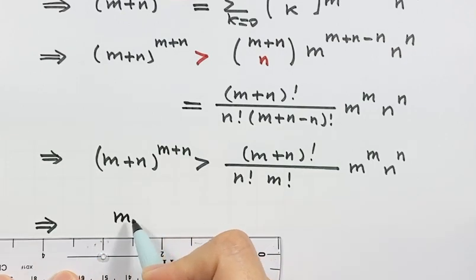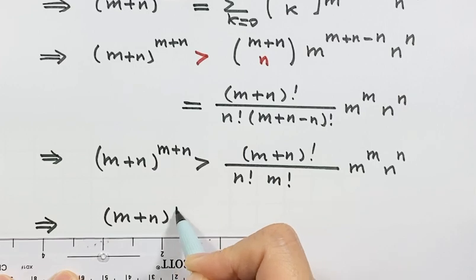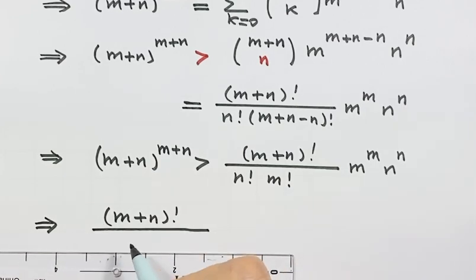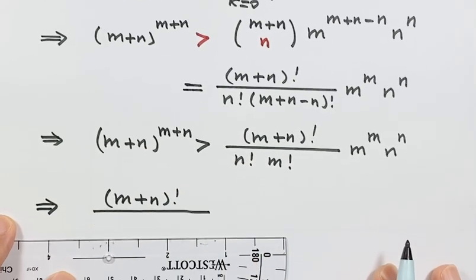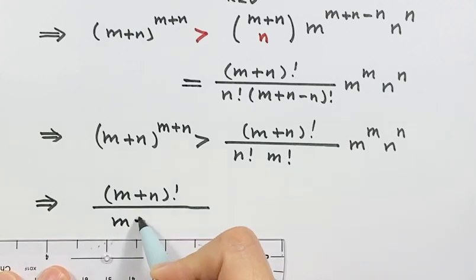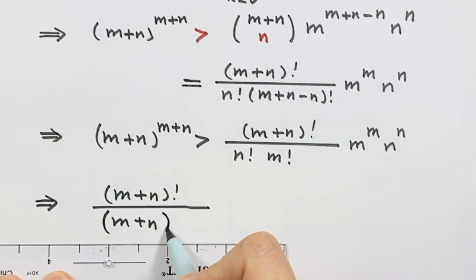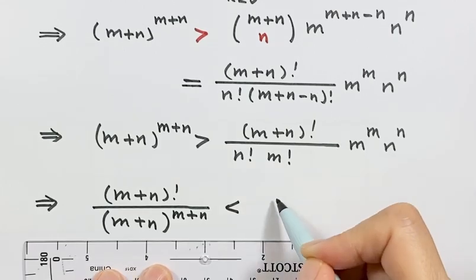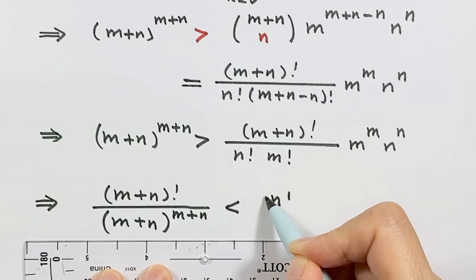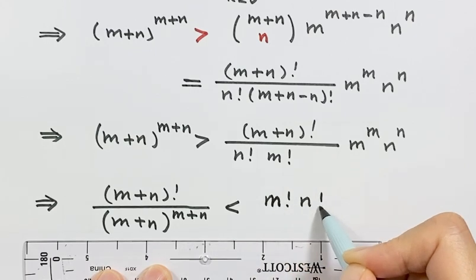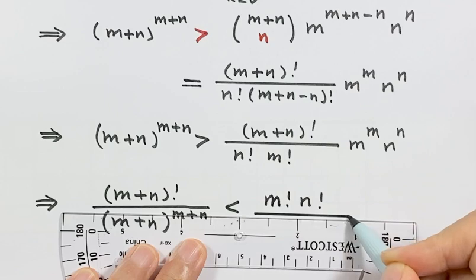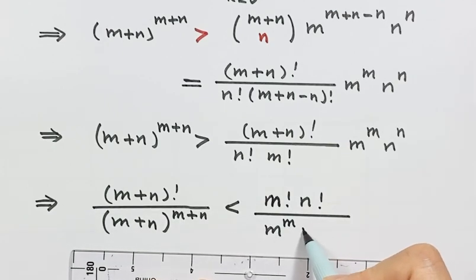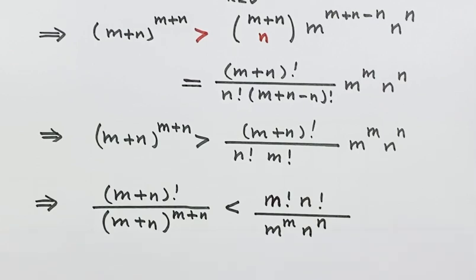So we have the final inequality we try to prove. That is, (m plus n) factorial divided by (m plus n) to the power (m plus n), is less than m factorial times n factorial, times m to the power m, times n to the power n. So this is the inequality we have proved.